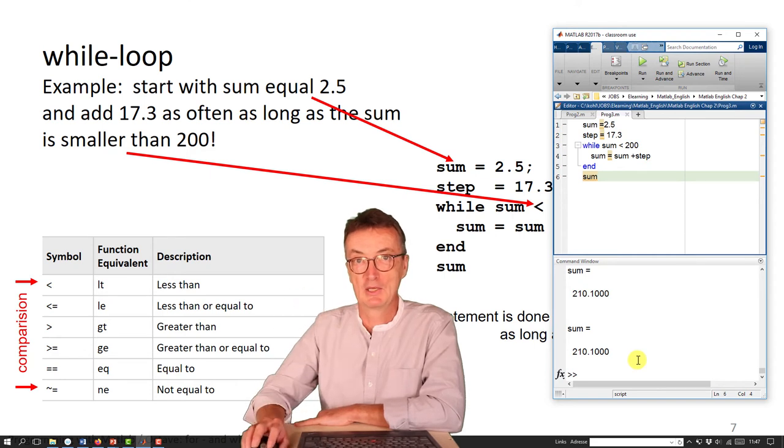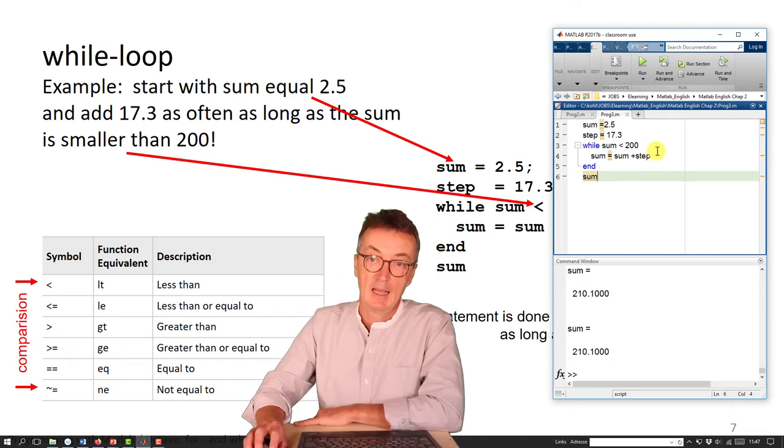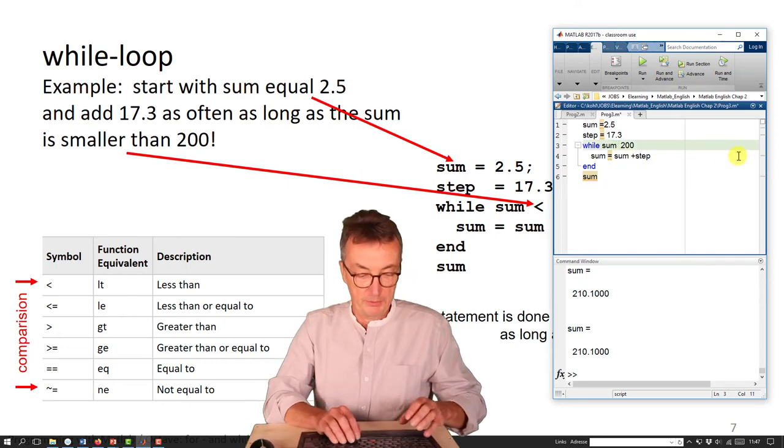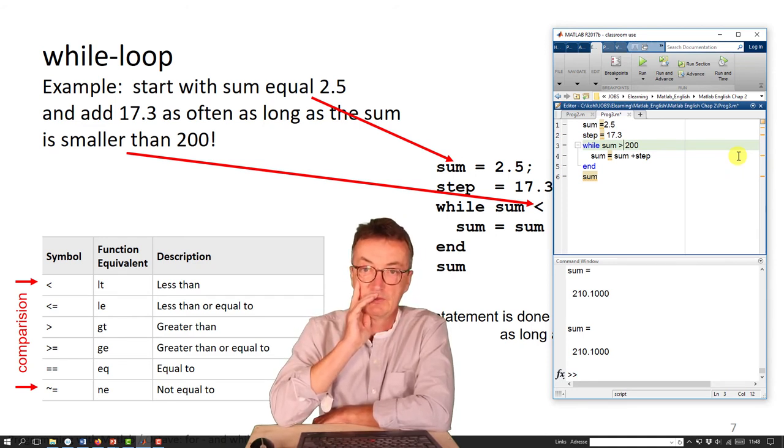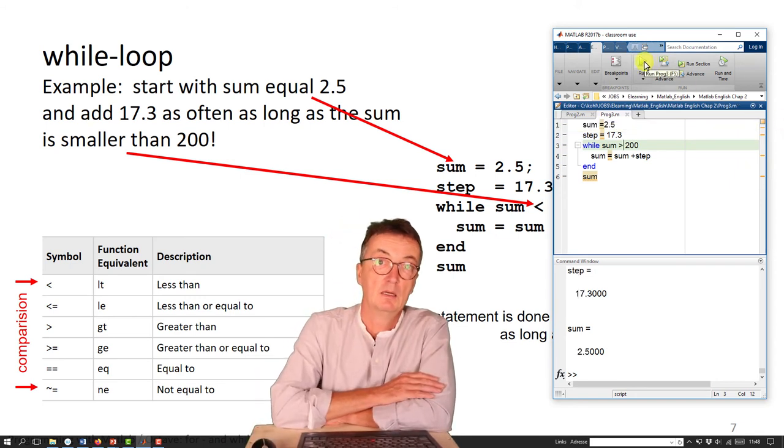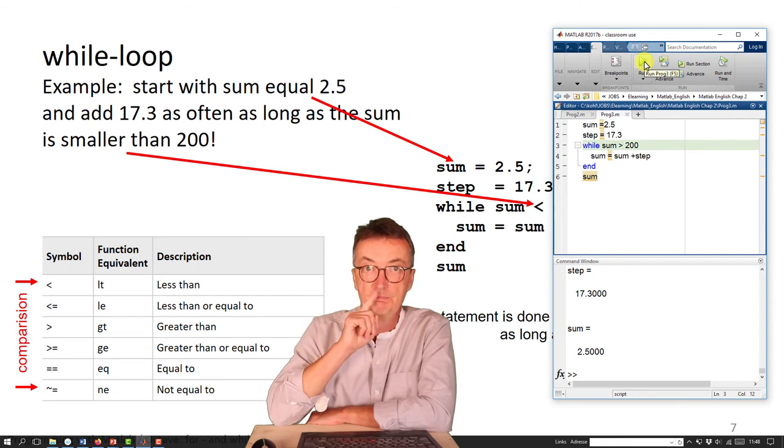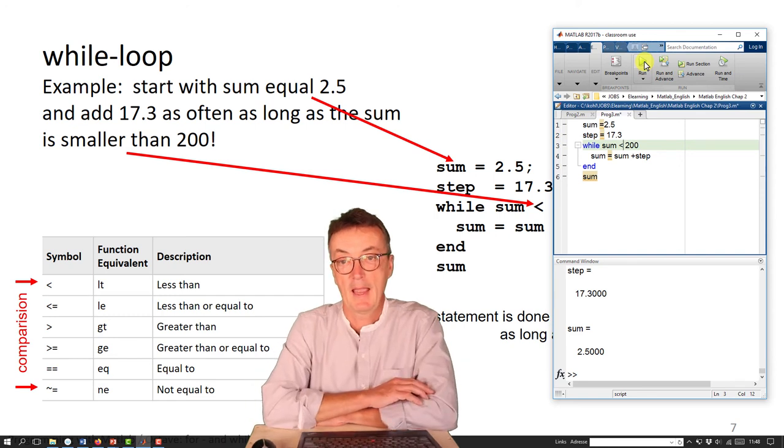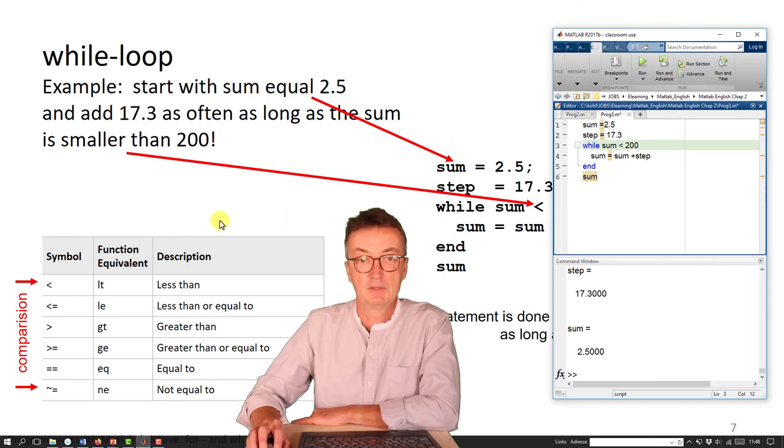Let's see whether the thing runs and what it is giving. 210.1. Okay. I couldn't calculate that in my head or at least I would need some time. So, let's have a look at a few pitfalls here. Let's say we got this for instance the comparison wrong. Let's say as long as the sum is larger than 200, do the calculation. Then the loop would never be entered. So, nothing is done. So, it's pretty important to get this comparison right.